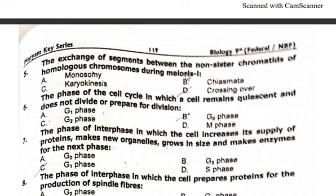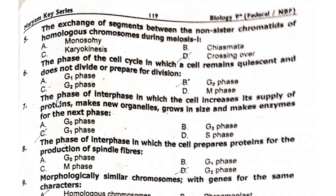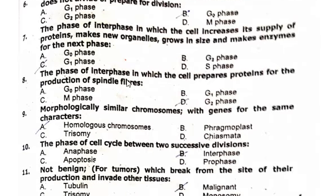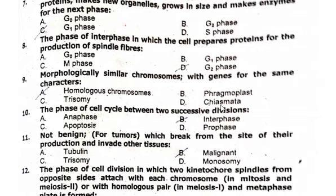The exchange of segments between non-sister chromatids of homologous chromosomes during meiosis I is crossing over. The phase of cell cycle in which the cell remains quiescent and does not divide or prepare for division is G0 phase. The phase of interphase in which the cell increases its supply of proteins, makes new organelles, grows in size, and makes enzymes for the next phase is G1 phase. The phase of interphase in which the cell prepares for the production of spindle fibers is G2 phase. Morphologically similar chromosomes with genes for the same characters are homologous chromosomes.